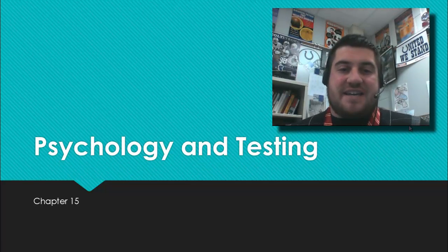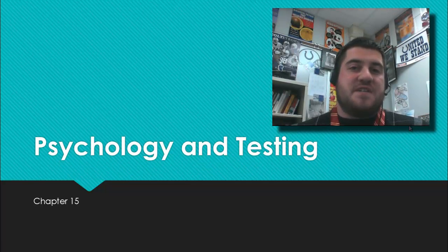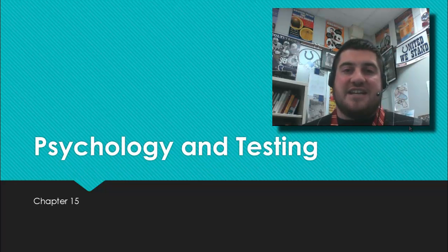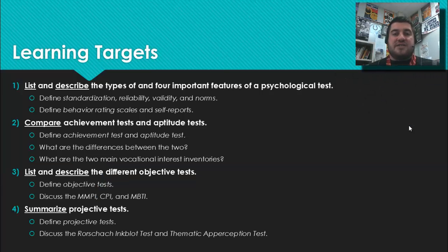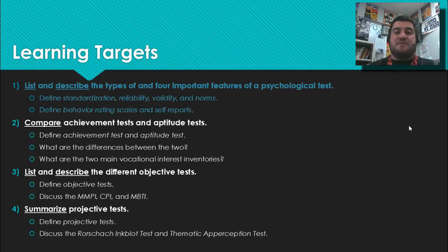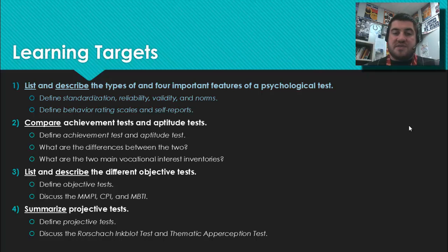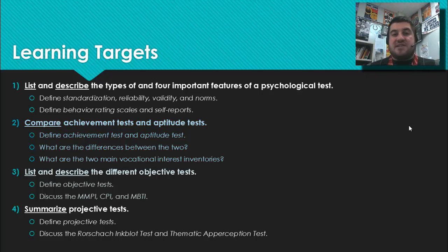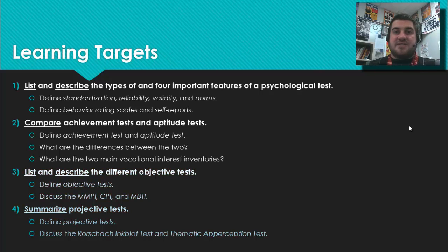Hello, welcome back to Psych. The only video for Chapter 15 is over psychology and testing — what are the different types of psychology tests that we use? Your learning targets for today are to list and describe the types of and four important features of a psychological test: standardization, reliability, validity, and norms.